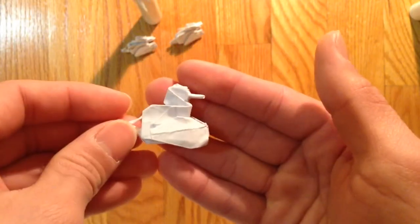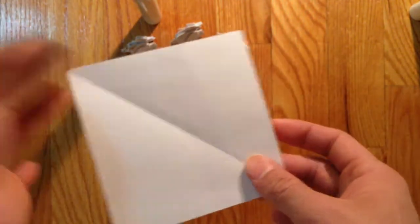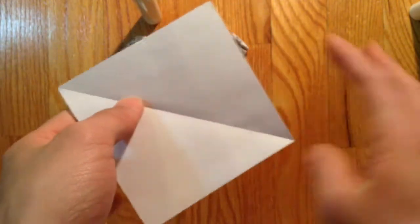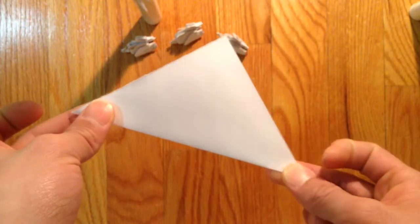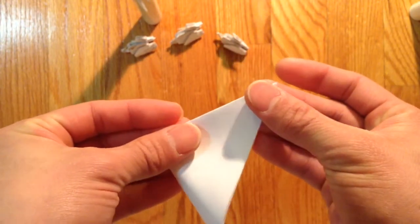First you need a square piece of paper and you're going to fold a frog base. So what that is, is you fold it in half like this, and you fold it in half again like so.